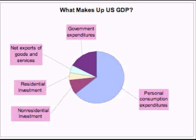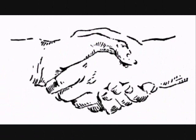The third component of GDP is government spending. Approximately 20% of the US gross domestic product is government spending — a huge number. Since such a large percentage of GDP is government spending, the government can increase or decrease GDP by changing how much it spends. If inflation is a concern, it can reduce GDP by cutting its own spending; if unemployment is a concern, it can increase GDP by increasing spending.